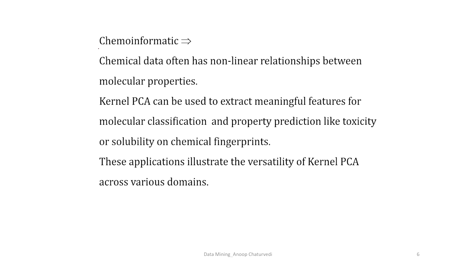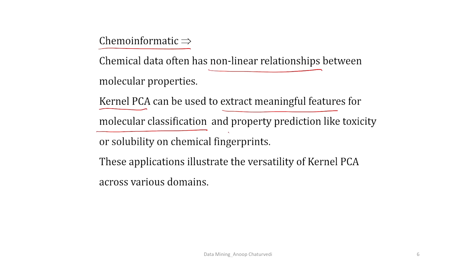Even in cheminformatics, chemical data often has non-linear relationships between molecular properties, and to identify those non-linear relationships you can use kernel principal component analysis. For example, to extract meaningful features for the purpose of molecular classification. Kernel PCA also helps in predicting various properties of chemicals like toxicity or solubility based on chemical fingerprints. One can apply kernel PCA in various fields.